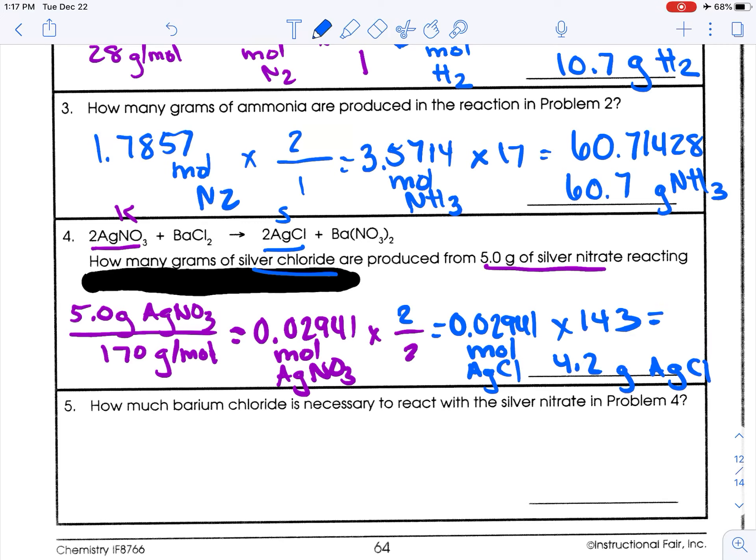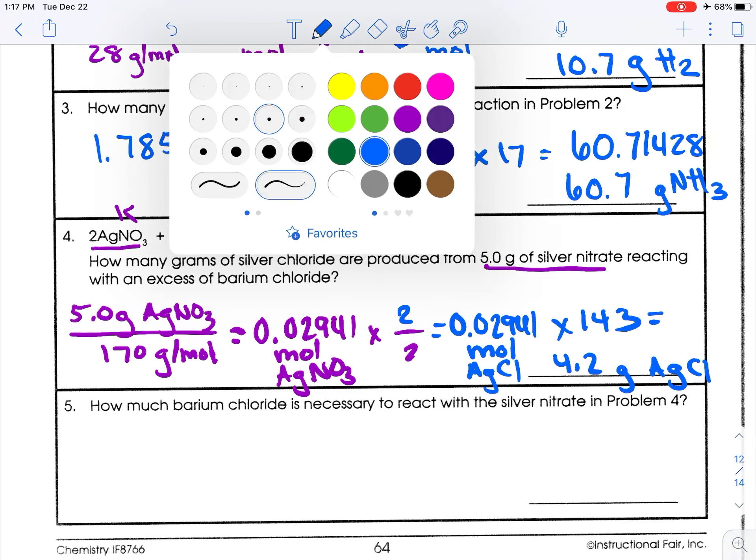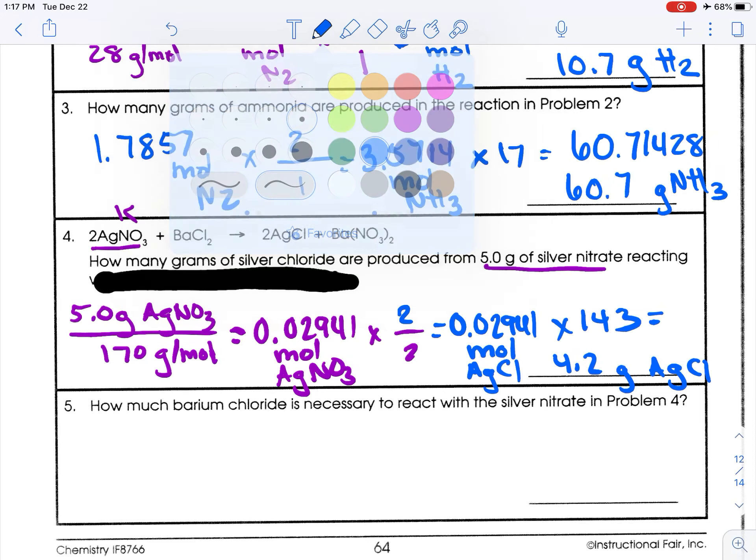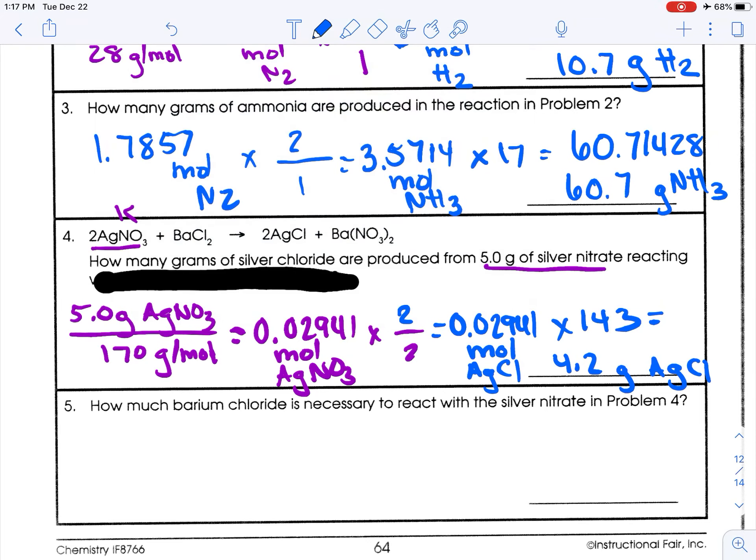Last one. Now we have the exact same given. We just have a new seek this time. So I'm going to go to here. Let me go back to this just for the sake of keeping things clear. Here. Okay. So in this one, I seek barium chloride. Okay. So it's going to be a little bit different.